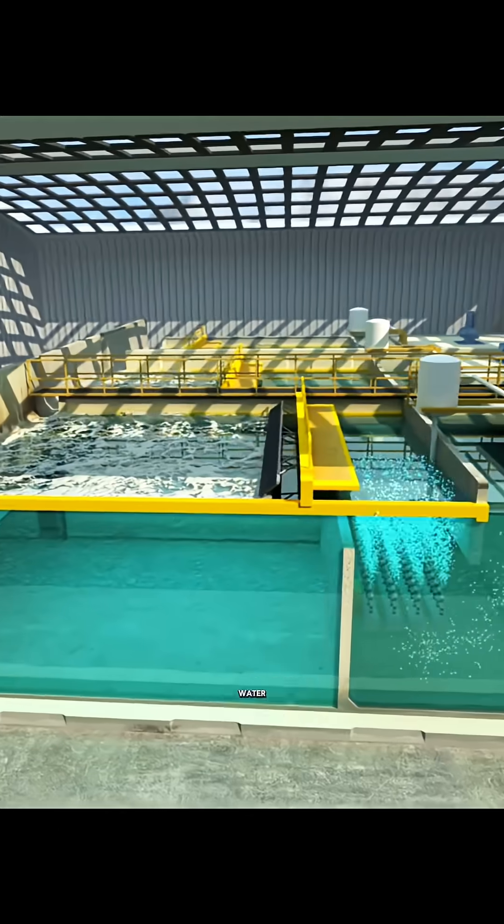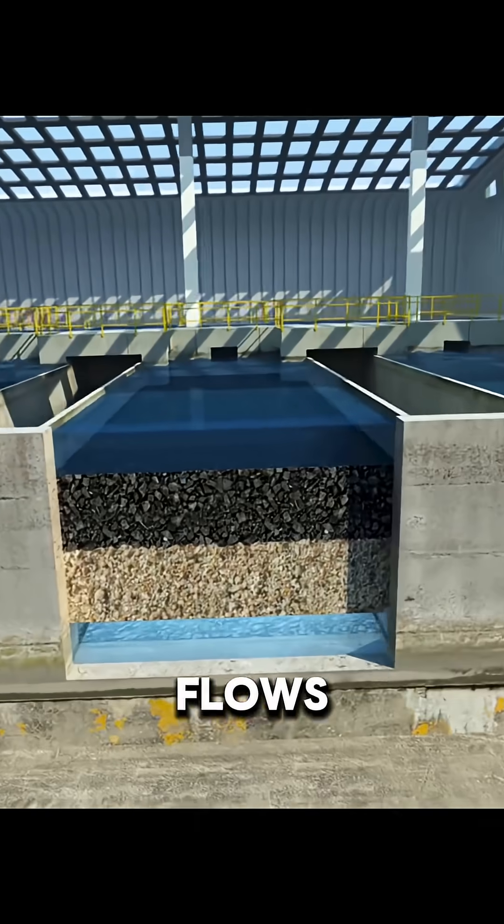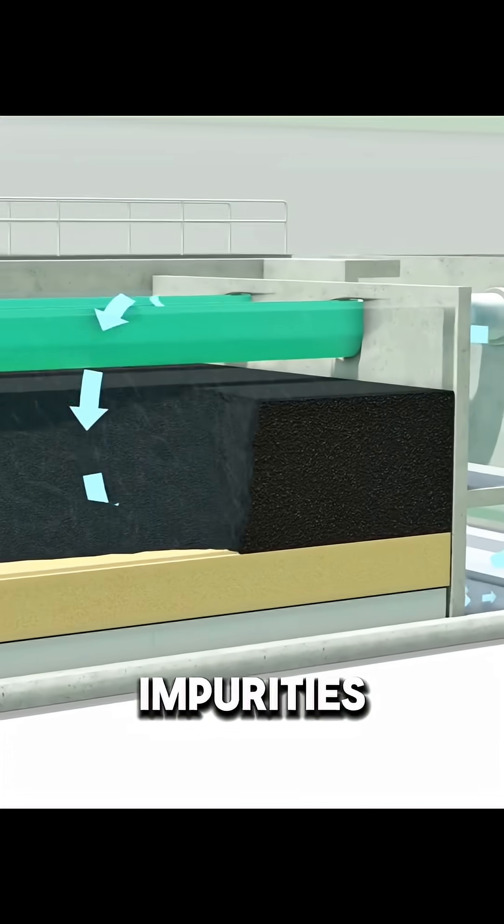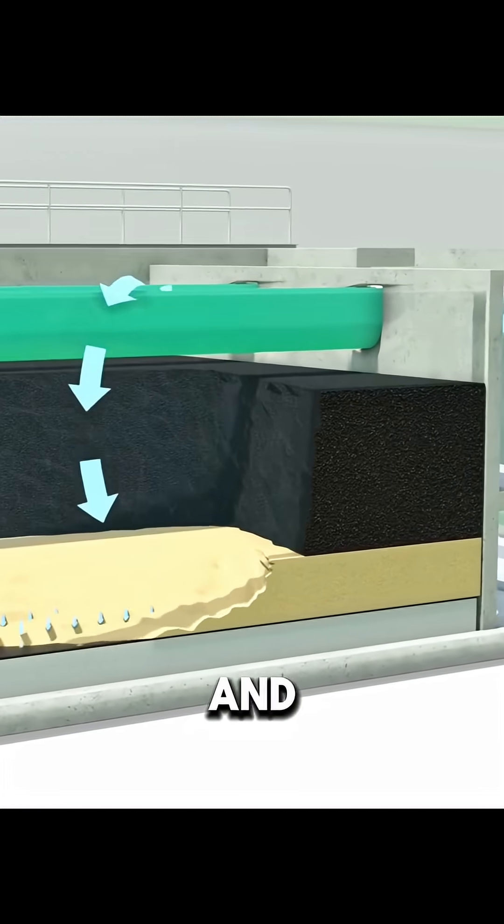At this point, the water looks clear and clean. Next, it flows through layers of sand and activated carbon to remove finer impurities, leaving mostly salt and water.